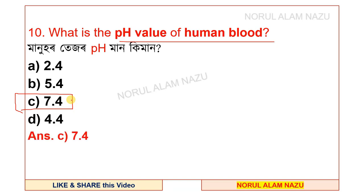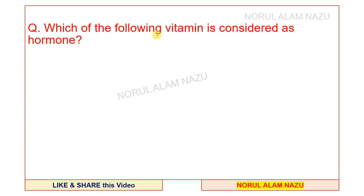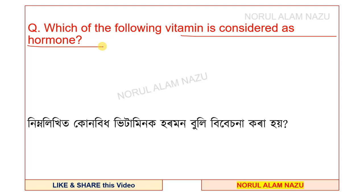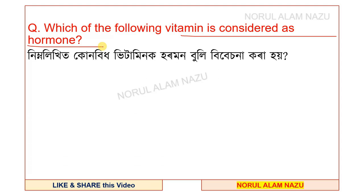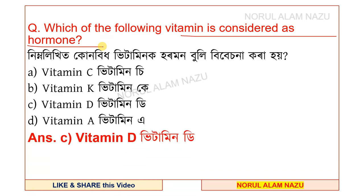pH stands for potential of hydrogen. Question 11: which of the following vitamins is considered as a hormone? It is also considered as a hormone.